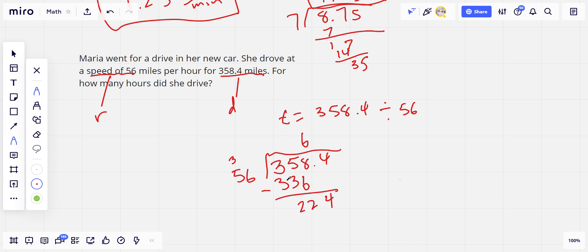How many 56s in 224? Let's see. Maybe 4. Oh, I better put my decimal point up here. 6 times 4 is 24. 4 times 5 is 20, plus 2 is 22. It comes out even.